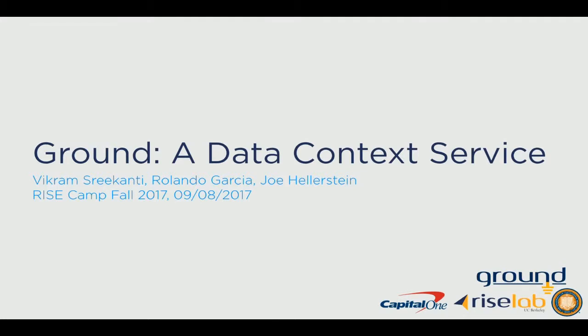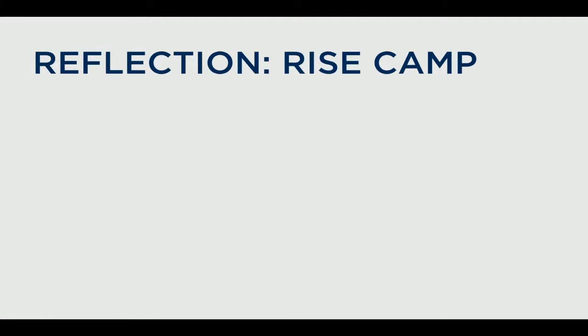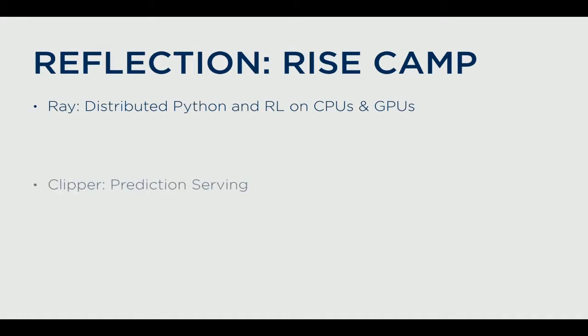Before I start telling you exactly what I mean by that, I'd like to take a second and reflect on all the systems we've talked about so far during RISE Camp. First, you learned about Ray, which is a distributed Python execution framework oriented towards developing AI applications. Then we talked about Clipper, which is a low-latency prediction serving system. And this morning, Eric told you about Pyren, which allows you to automatically parallelize data analytics using AWS Lambda.